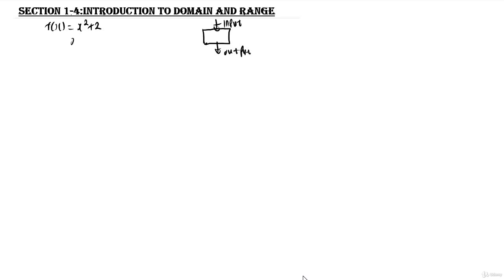Let's say we plug in s equals 2. Whenever we see s, we're going to plug in 2. So this will be 2 squared, which is 4, and 4 plus 2 is going to give us 6. So 2 is the input, and 6 is the output because that was the result we got. Domain is simply our input value — we call this the domain. And the range is simply our output value.